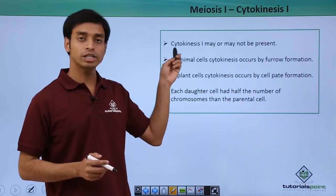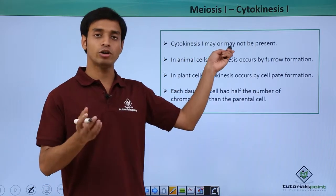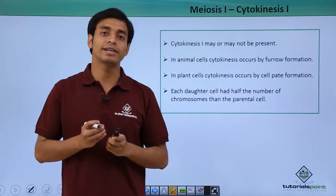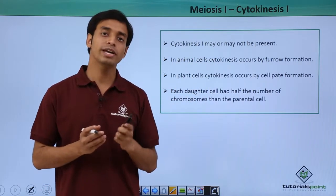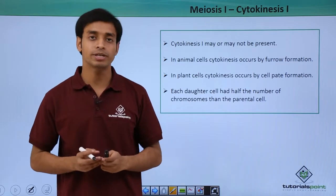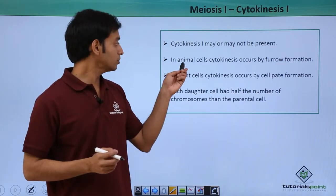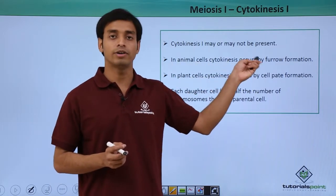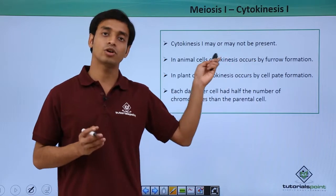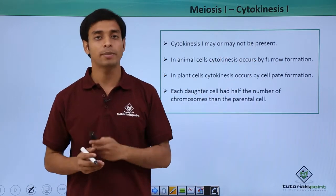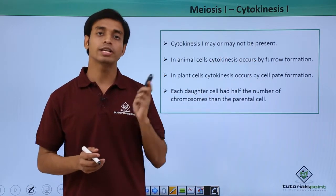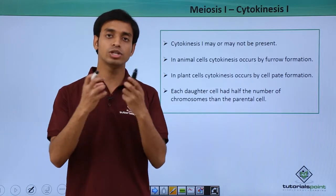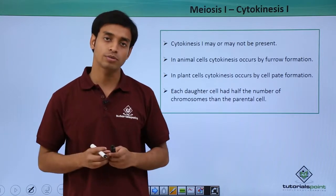In cytokinesis 1, this may or may not be present, so it is not mandatory. In animal cells, cytokinesis occurs by furrow formation, as we have already discussed in mitosis. Because of the formation of the furrow, the two new daughter cells are formed.